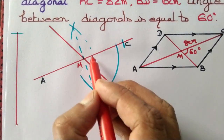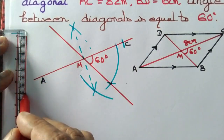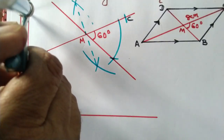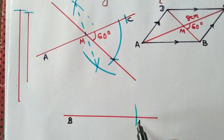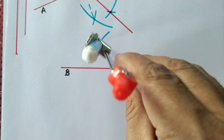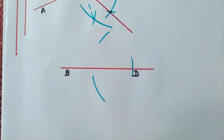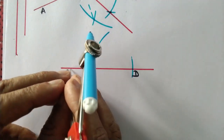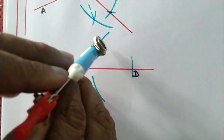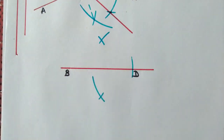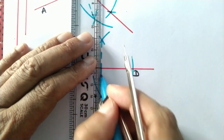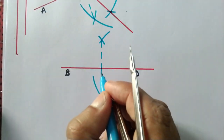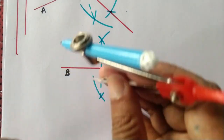Next, we draw a line segment measuring 6 centimeters, then use our compass to copy and paste it to get diagonal BD measuring 6 centimeters. Since point M bisects BD, we bisect BD by drawing two circular arcs — one above, one below — from point D, then from point B. Those arcs intersect and we join them, obtaining BM measuring 3 centimeters. We then copy and paste BM to place BD correctly.